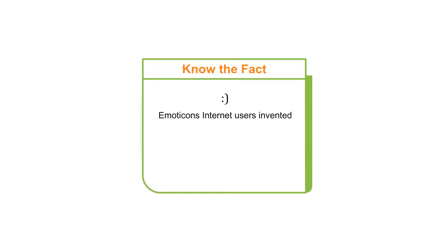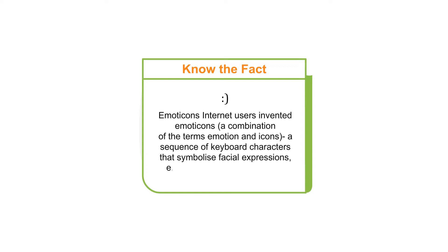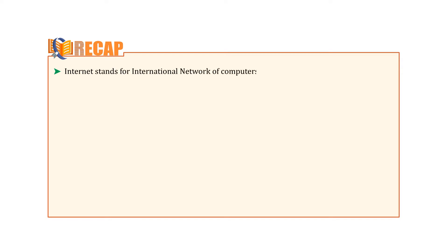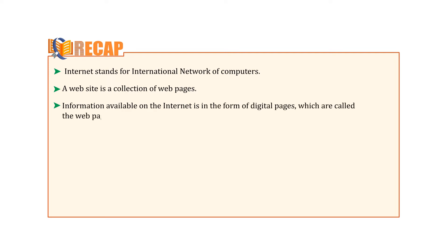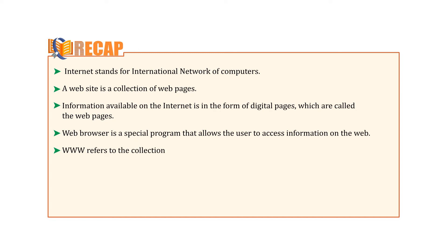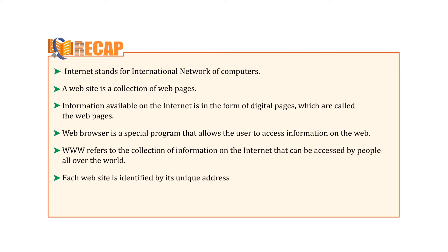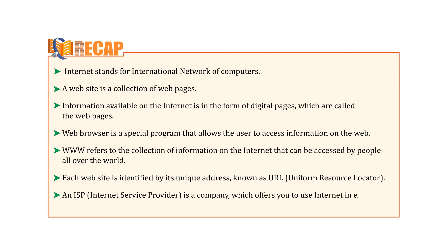Internet users invented emoticons — a combination of the terms 'emotion' and 'icons' — which are sequences of keyboard characters that symbolize facial expressions. For example, a combination of characters looks like a smiling face when viewed sideways. To recap: Internet stands for International Network. A website is a collection of web pages. Information on the internet is in the form of digital pages called web pages. A web browser is a special program that allows the user to access information on the web. WWW refers to the collection of information on the internet accessible by people all over the world. Each website is identified by its unique address known as a URL. An ISP is a company which offers internet access in exchange for a monthly fee.